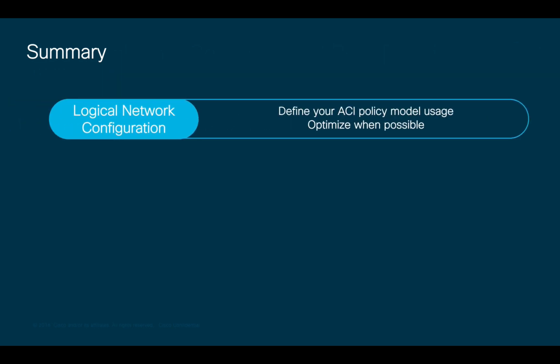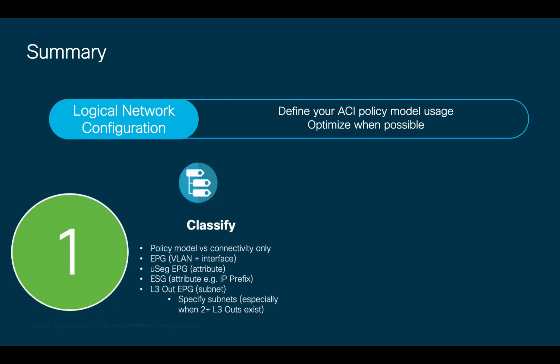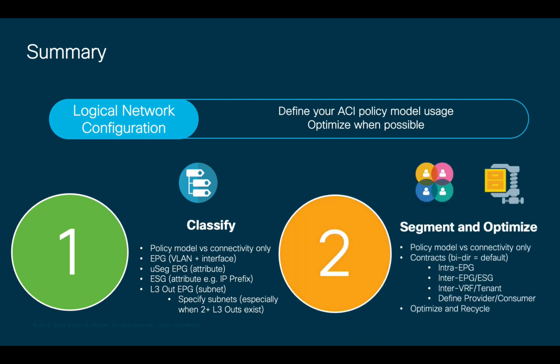As a summary, you now know multiple ways to connect pretty much anything into ACI, and even a few tricks to verify and optimize ACI's operations. Make sure you pick the model that your organization needs, whether that's a pure connectivity model using ACI mainly as an automated network, or by leveraging the policy model with the right level of contracts your organization may need. Keep in mind that when using multiple L3outs, it is recommended to classify the right subnets on each L3out EPG instead of using Quad Zero, and that you should always optimize and recycle every time you can as a best practice. ACI provides you with a better, simpler, and secure network, any size, anywhere, and on any cloud. Please watch the rest of the videos in this series to learn more.